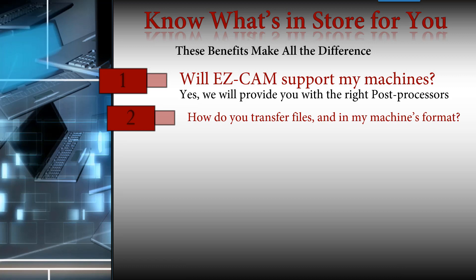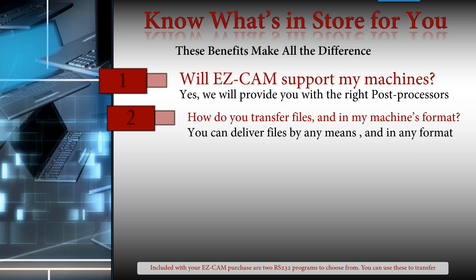How do you transfer files and in my machine's format? You can deliver files by any means and in any format. Included with your EasyCam purchase are two RS-232 programs to choose from. You can use these to transfer your file or even run DNC drip feed. Other means of delivery are USB, floppy, PCMCIA card, and Ethernet. The file to be sent over will use the machine's extension, such as the standard TXT, .M for Anilam, .CNC for Centroid, and so on.